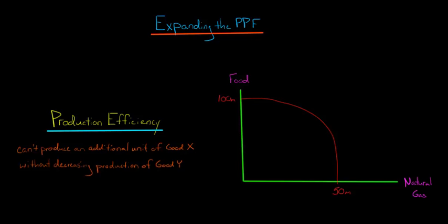This is all the points that are efficient in production, and that means if you picked any point here, so let's say right here, at that point, you could not produce an additional unit of food without giving up some natural gas and vice versa. So we've talked about that.